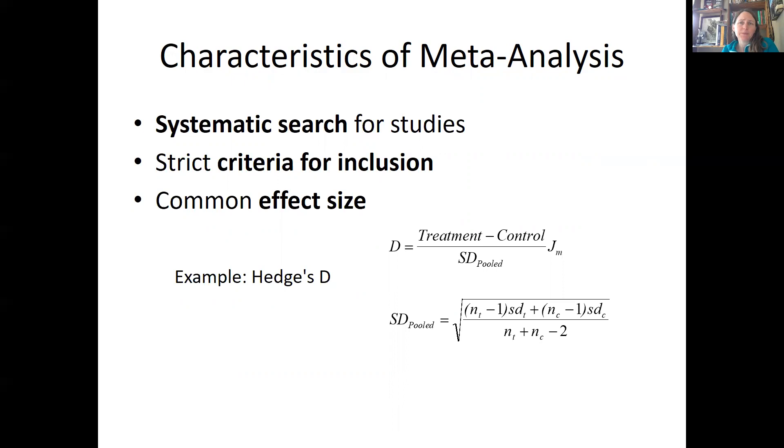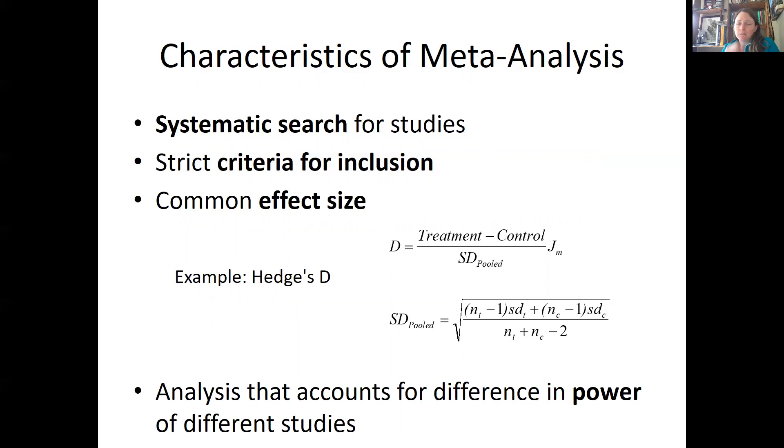It's the treatment mean minus the control mean divided by the standard deviation and then times some factor J. Now, we're not going to get into the details of the math, but you can kind of see what the standard deviation that's pooled, what that looks like. It's some sample size times the standard deviation for the treatments plus the sample size minus one times the standard deviation for the controls divided by the sample sizes of both minus two and then the square root of all of that.